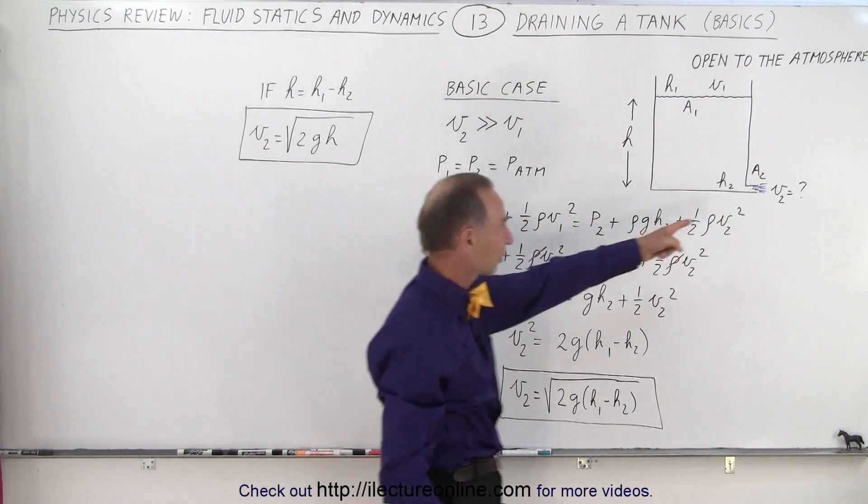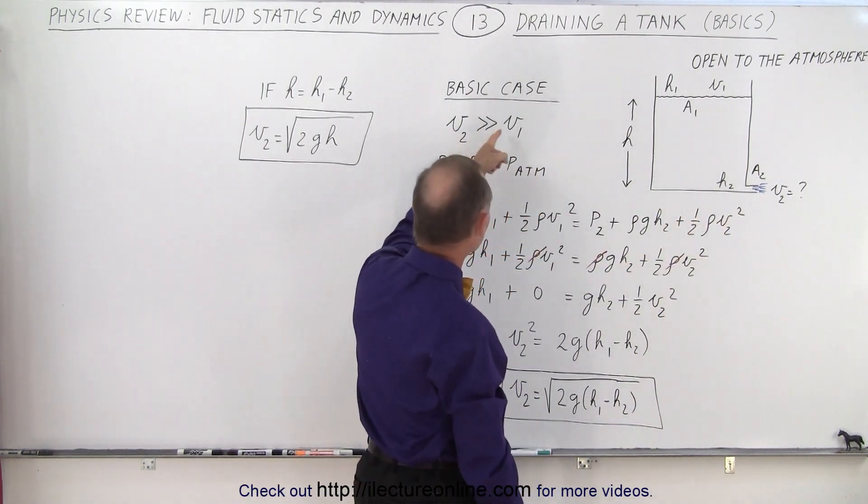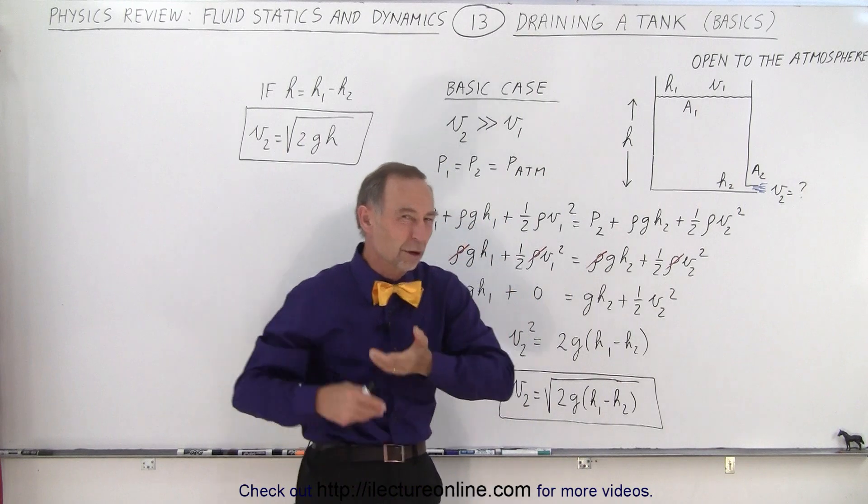So what we can say is that V2, the velocity at the bottom, is much much greater than V1, so essentially we can call V1 zero.